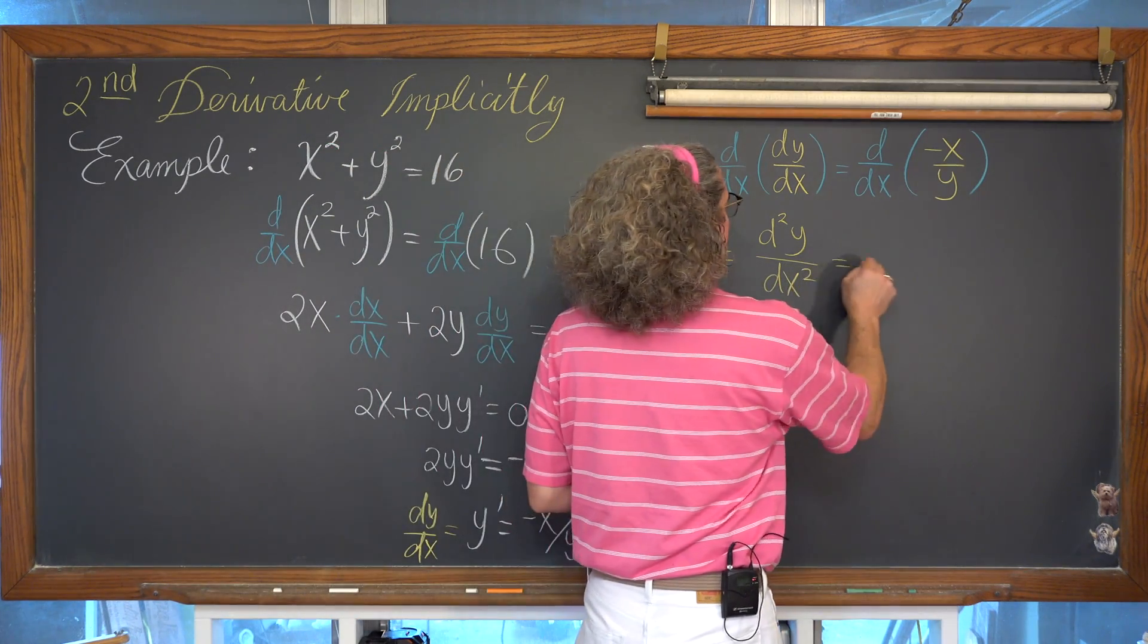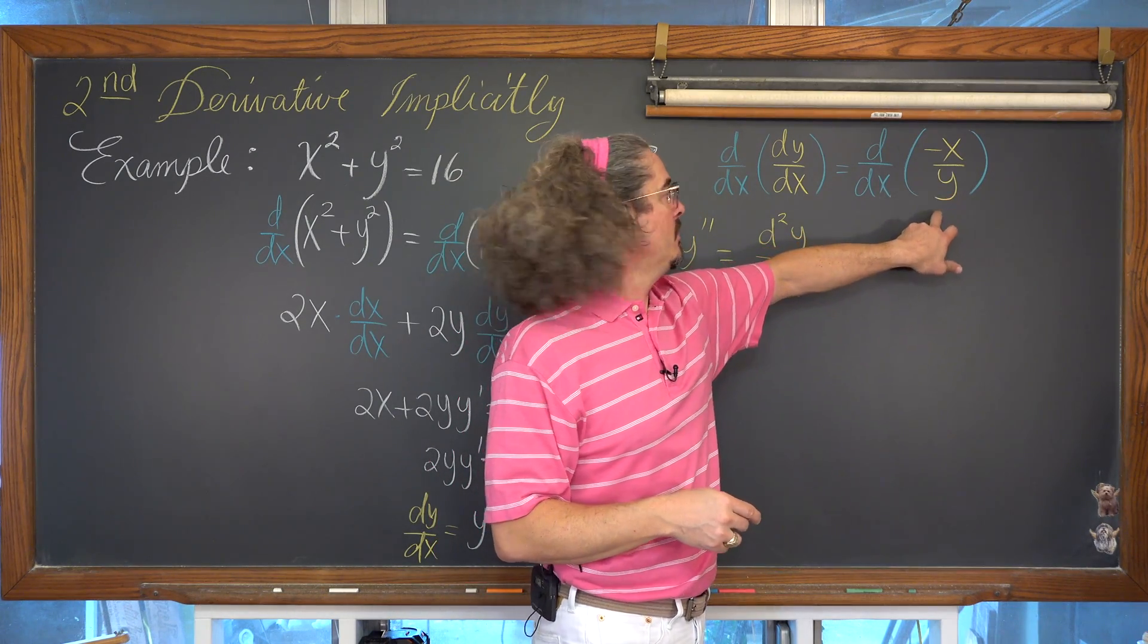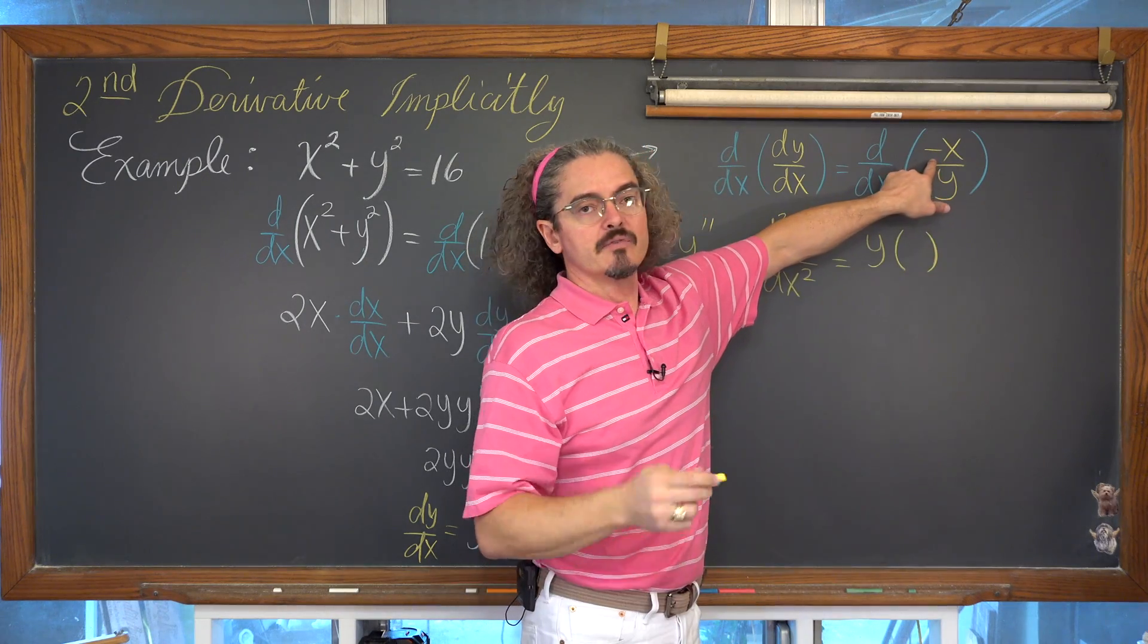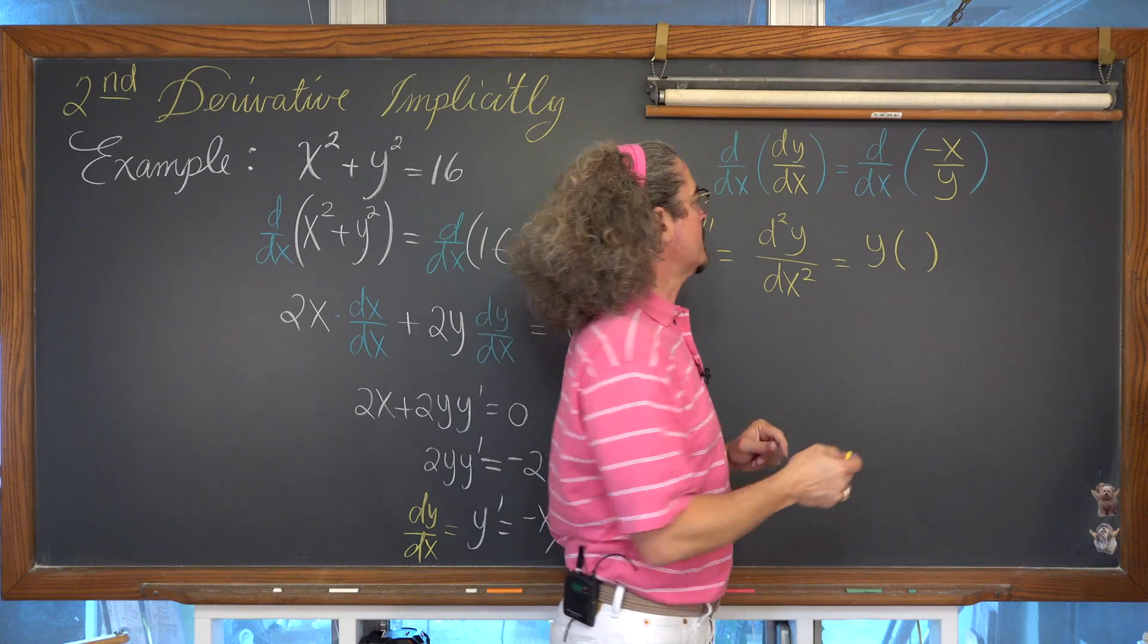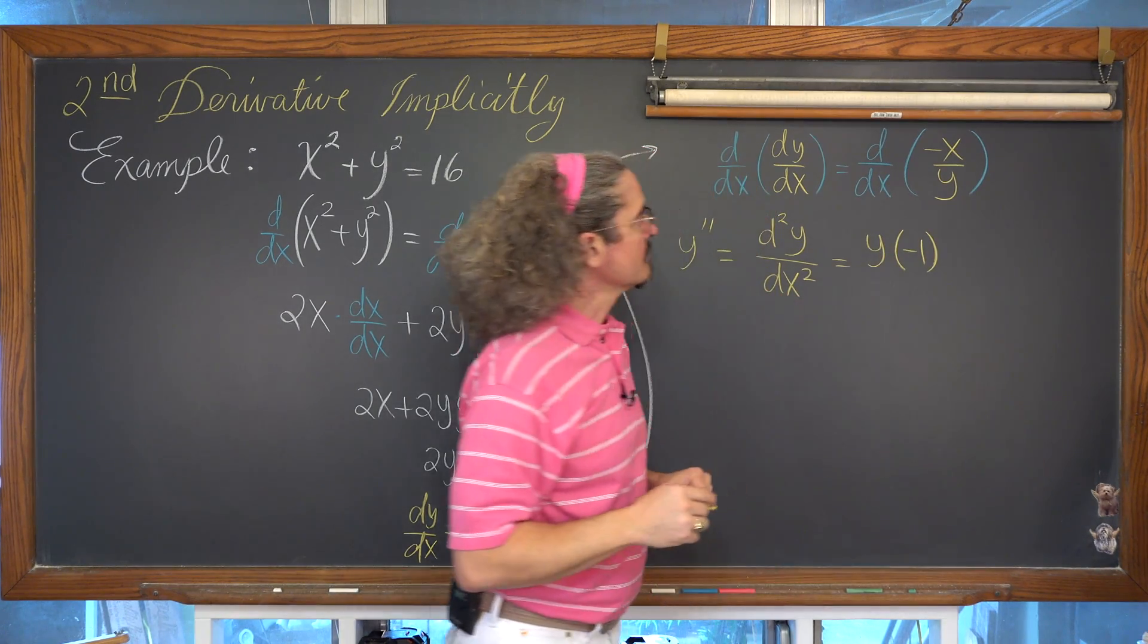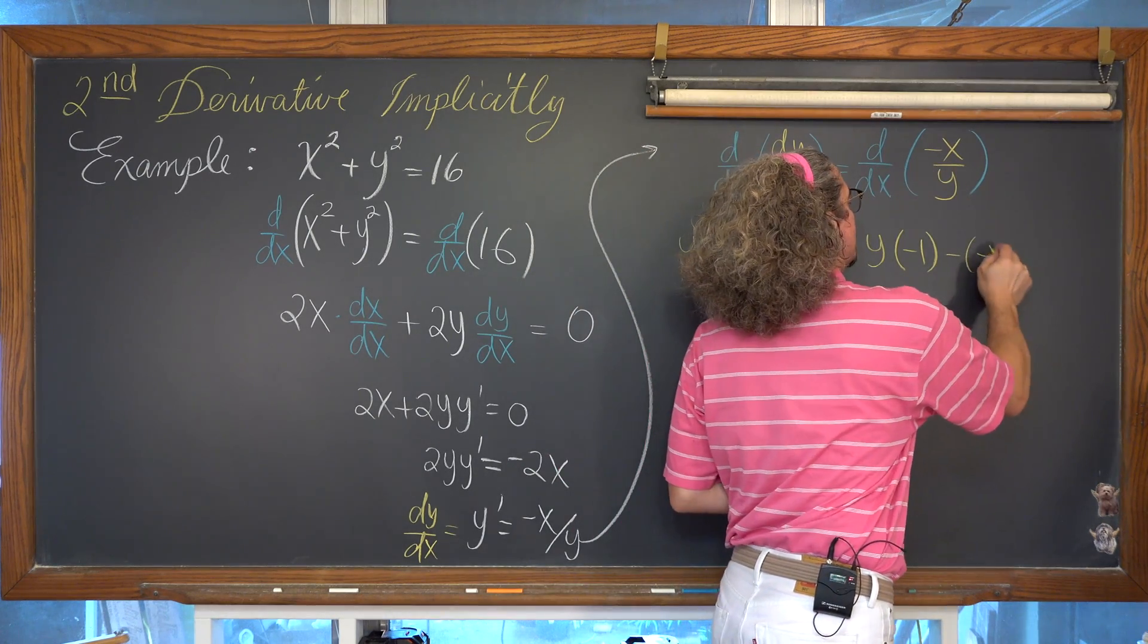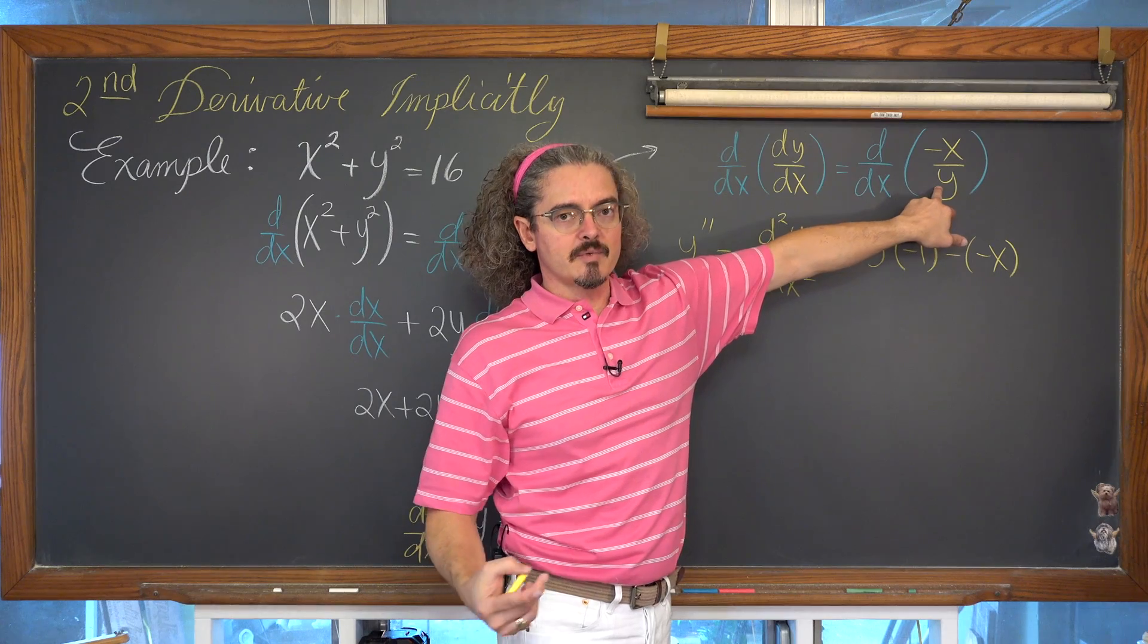And on the right hand side, we have of course the derivative of a quotient. So that's going to be low, so y, d high, the derivative of negative x with respect to x, is going to be negative 1, minus high, or the numerator, so minus negative x, d low, the derivative of the denominator.